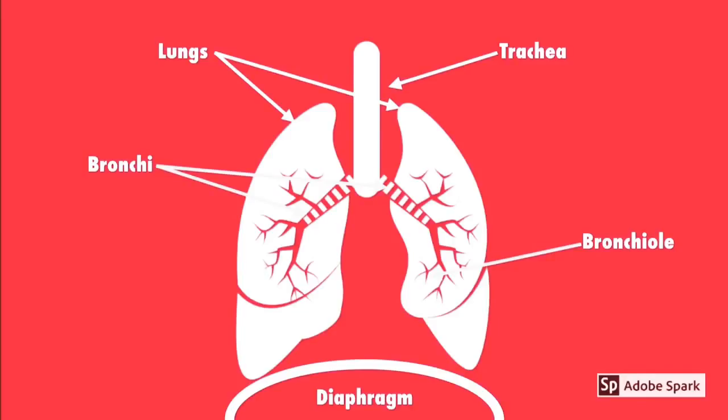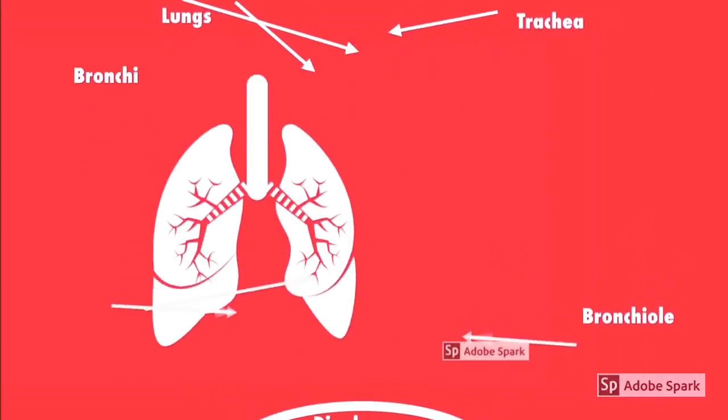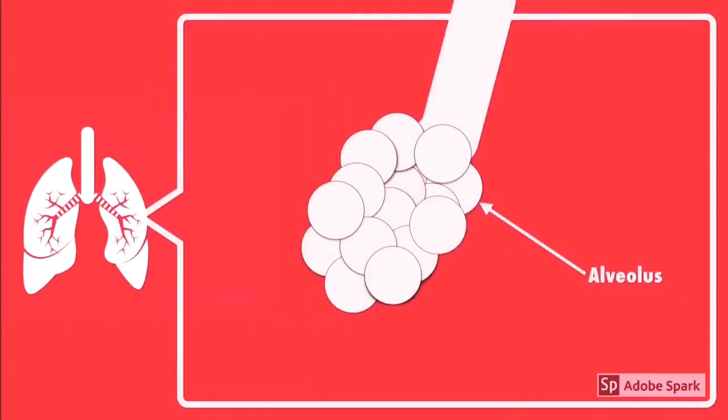When you zoom into a bronchiole, you'll find the alveoli. These small air sacs are where gas exchange actually occurs.